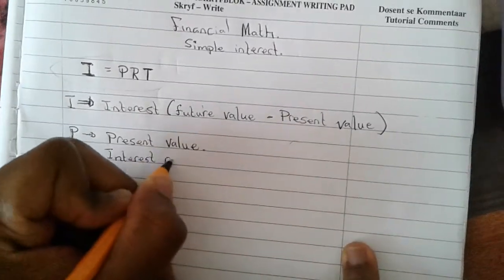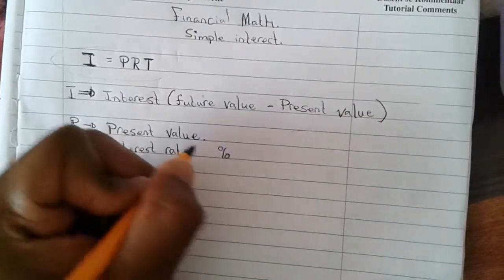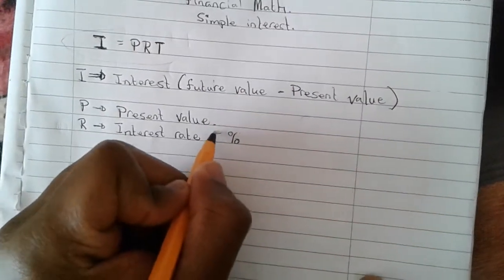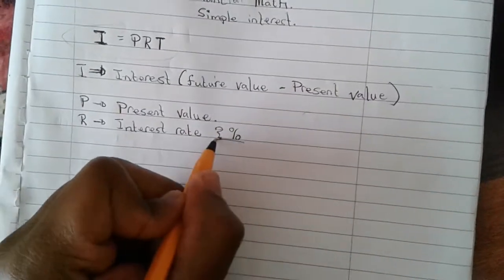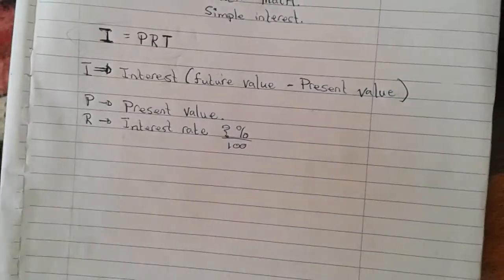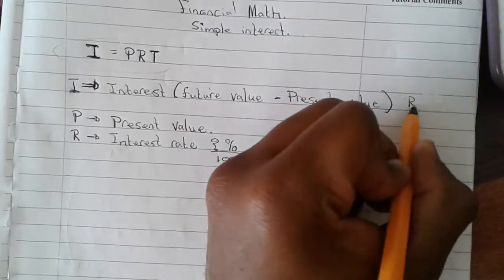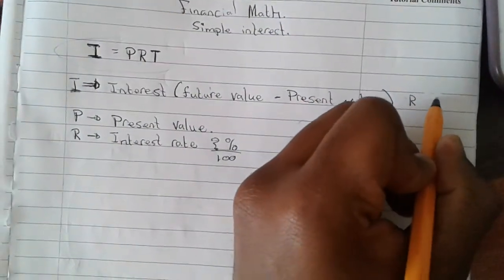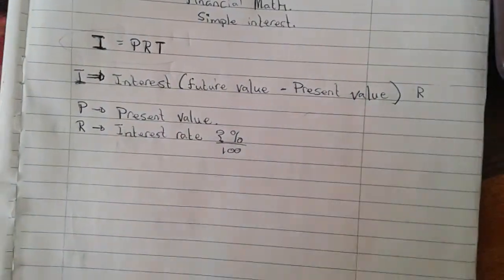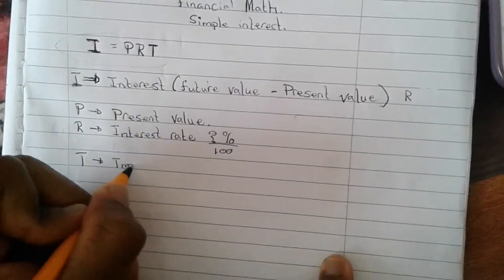R is the interest rate — not the interest itself, but the interest rate — expressed as a percentage. To calculate the interest rate, you take whatever number you are given and divide it by 100. Your interest is seen in rands or dollars (whatever currency you're given), your rate is seen by percentages — please be careful of that. T is time in years.